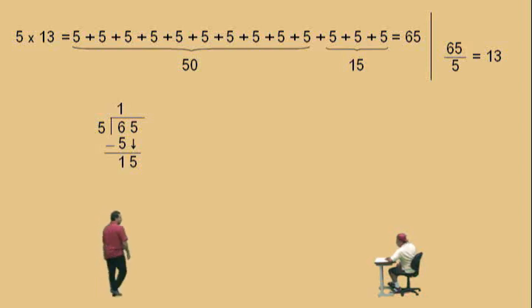Anyway, and so now 5 goes into 15 how many times, Charlie? Three times. Three, so you put 5 times 3 is 15, and 15 subtract 15 is? Zero. Zero. So the answer, 65 divided by 5 is 13, with a remainder of 0.